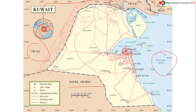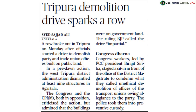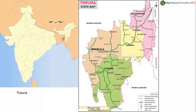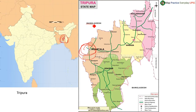Tripura demolition drive sparks a row — the news is emerging from Agartala. Agartala is the capital city of Tripura, located here. Tripura is landlocked by the international boundary of Bangladesh and by the states of Mizoram and Assam. Three sides of Tripura are landlocked by Bangladesh, while Mizoram and Assam share their state boundary on the eastern part of Tripura. Agartala is at the western part of Tripura, near Bangladesh.